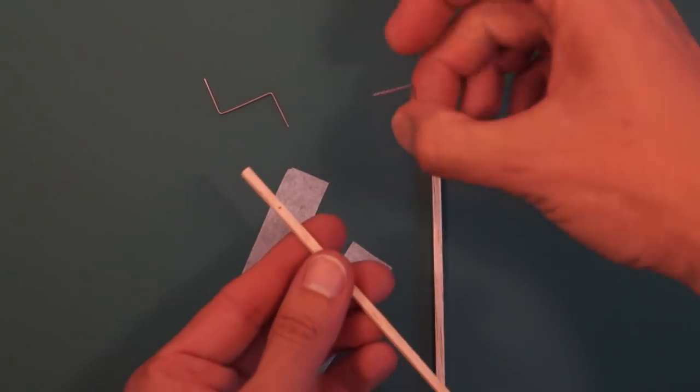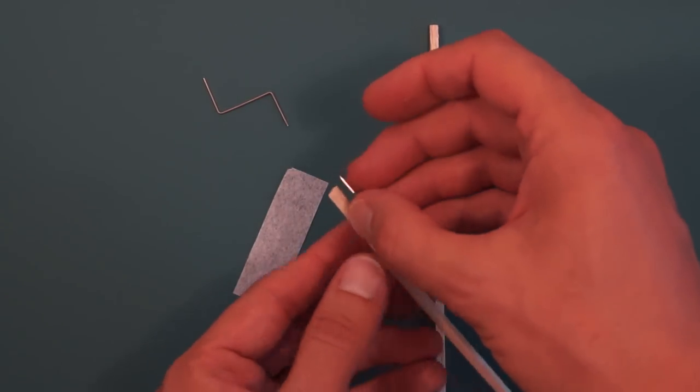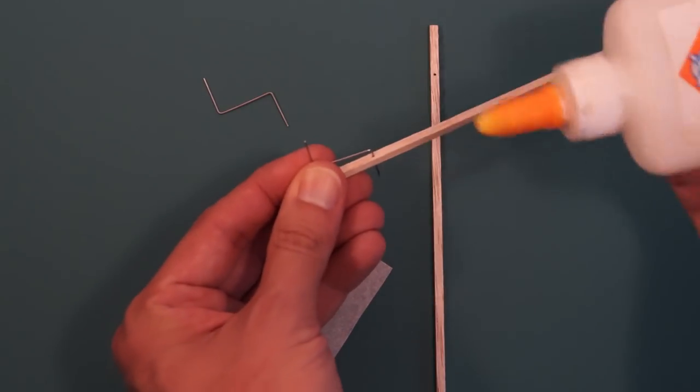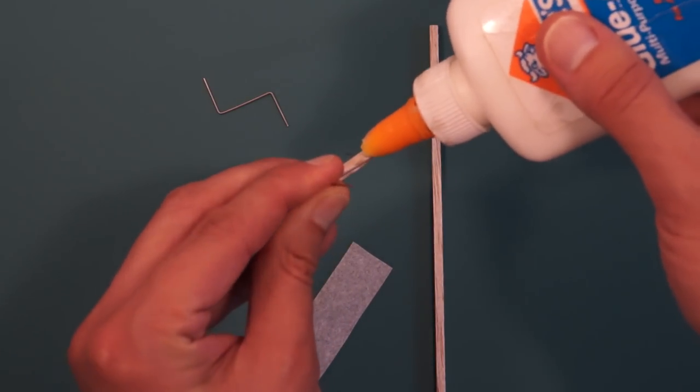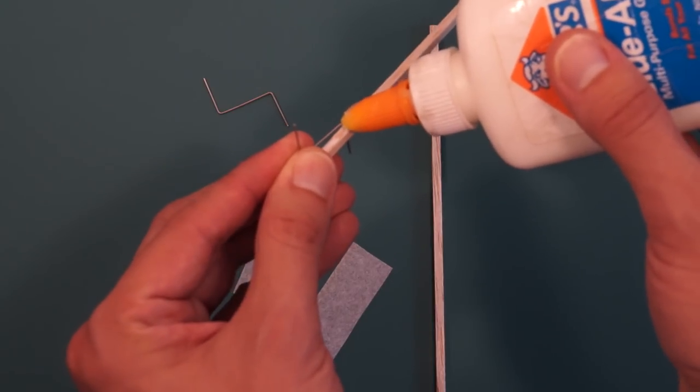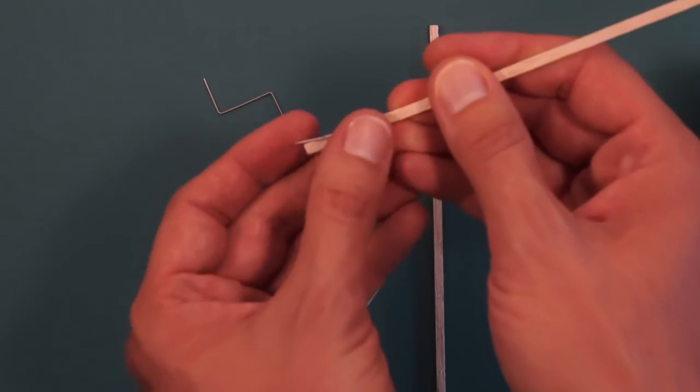These are going to go in the wing spars so it goes through the little hole there. Put some glue along there, get it around the hole too. Drop that on, press it down, smooth out the glue.